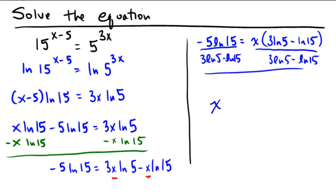So what do we end up getting? x equals negative 5 ln 15 over 3 ln 5 minus ln of 15. And that should be the final answer.